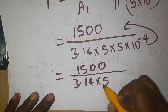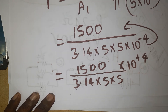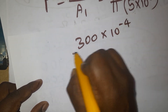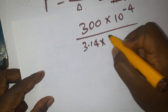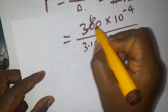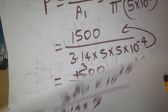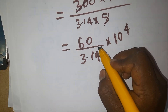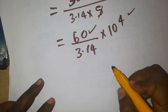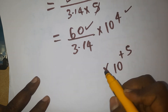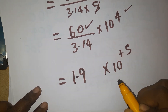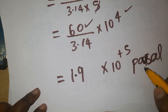Continuing the calculation: 1500 / (3.14 × 25 × 10⁻⁴) = 1500 / (3.14 × 25) × 10⁴. Simplifying, 1500/25 = 60, then 60/3.14 × 10⁴ ≈ 1.9 × 10⁵ Pascals. So the pressure acting is approximately 1.9 × 10⁵ Pascals.